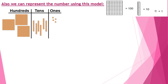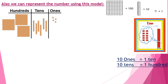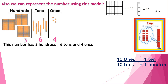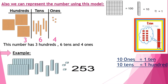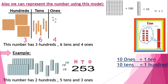The small square equals 1, the stick equals 10, the big square equals 100. You should know that 10 in 1s equals one 10, and 10 small squares equal 1 stick. Also, 10 tens equal 100, so 10 sticks equal one big square. Let's count this model: 4 in 1s, 6 in 10s, and 3 in 100s. For example, 253: this number has 2 hundreds, 5 tens, and 3 ones.